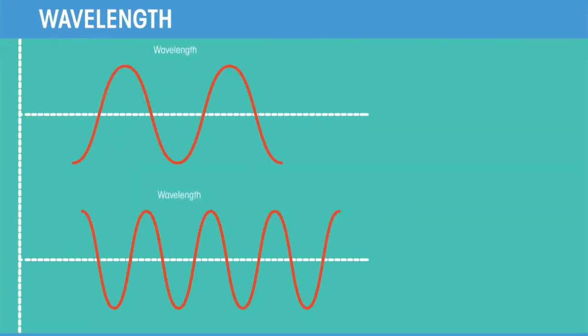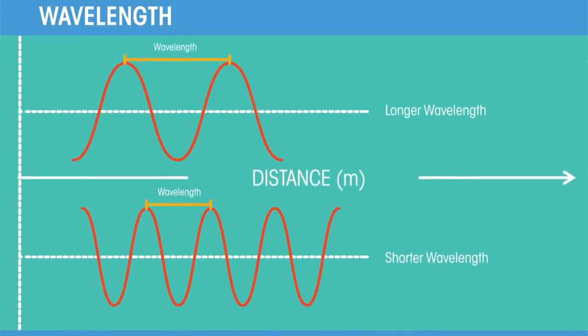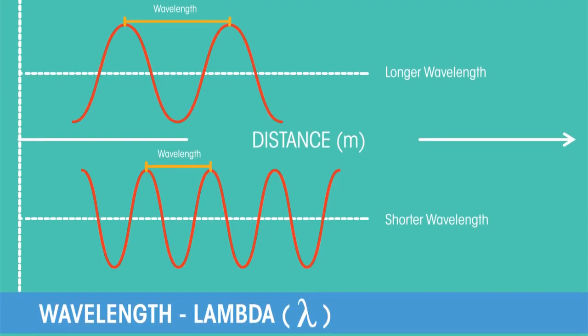Now for wavelength. The wavelength is the distance between a point on one wave and the same point on the next wave. For example, two peaks or two troughs. Wavelength is given the symbol lambda from the Greek letter and is usually measured in meters.